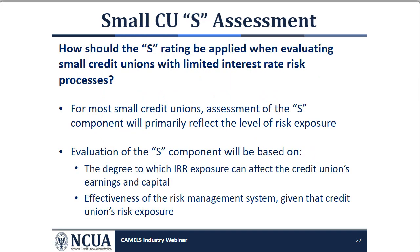How is the S rating to be applied when evaluating small credit unions with limited interest rate risk processes? The NCUA's current exam instructions allow examiners of credit unions with less than 500 million in total assets to use the estimated net economic value tool, or ENT. The ENT is NCUA's estimate of interest rate risk using standard sensitivity measurements and provides a quantitative interest rate risk category rating, which is a significant factor in determining the S component rating.